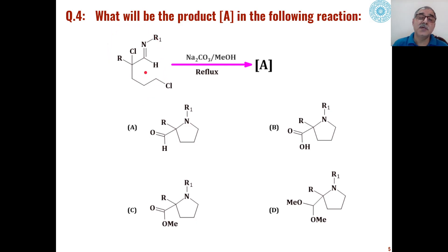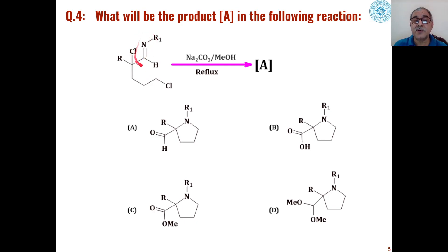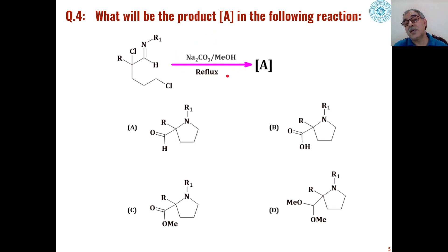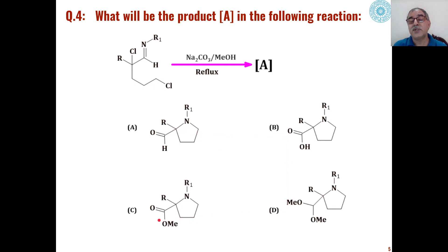The fourth problem is: these types of dichloro-Schiff bases — compounds having a carbon-nitrogen double bond, which are called Schiff bases — are reacted under basic conditions with sodium carbonate in methanol under reflux. What is the product formed, and out of these four choices, which is correct and how is that product formed?